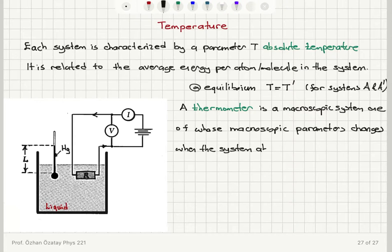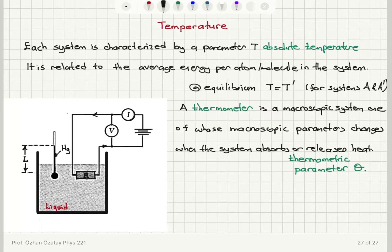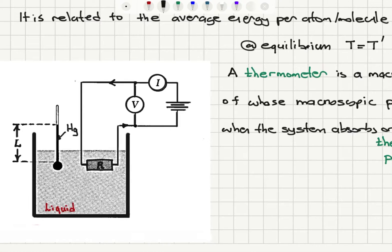The parameter that changes when the system absorbs or releases heat is called the thermometric parameter. We denote it with theta. As an example, we have a liquid whose temperature we would like to measure, and we consider two possible scenarios: using a mercury thermometer and using a resistive thermometer.